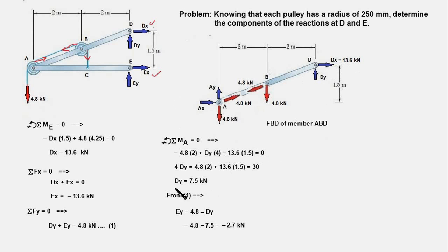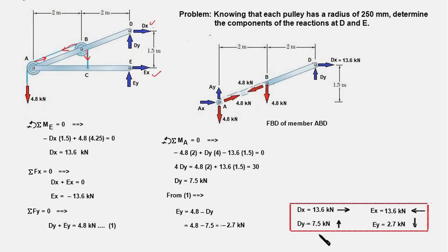Once we plug DY into equation number one, we get EY as minus 2.7 kN. So the values are: DX equals 13.6 kN, DY equals 7.5 kN, EX equals minus 13.6 kN, and EY equals minus 2.7 kN. The magnitude and direction of these forces are shown, and we are done.